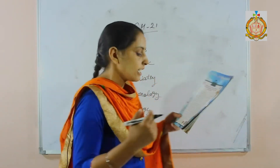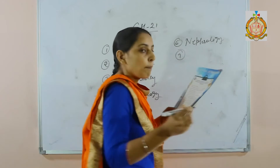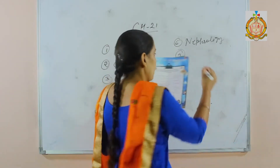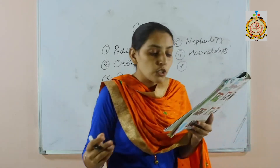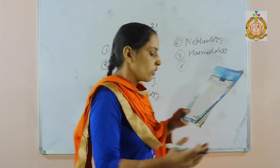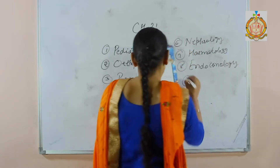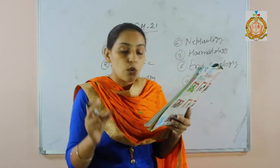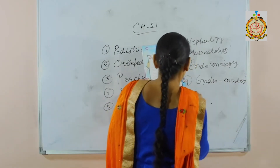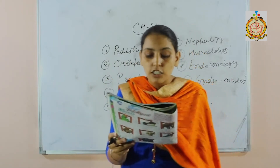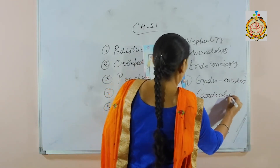Disease of the kidney is called nephrology. Blood and its diseases is called hematology. Next, endocrine glands and hormones — that is called endocrinology. Treatment of the organs of digestion is called gastroenterology. Diseases of the heart and cardiovascular system — that is cardiology.